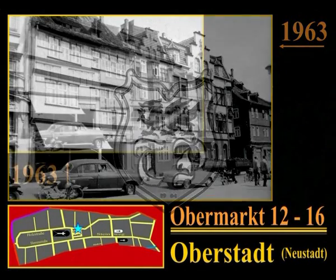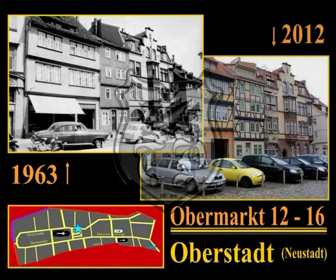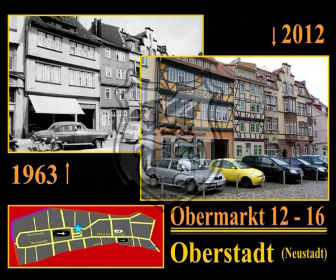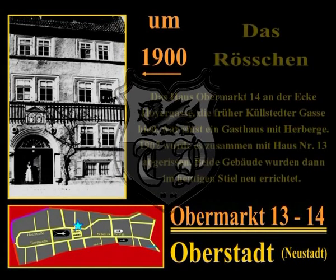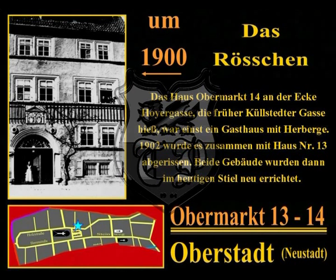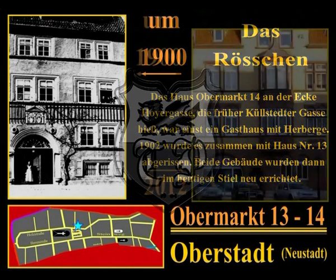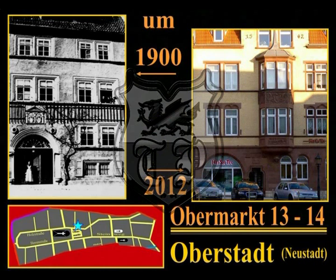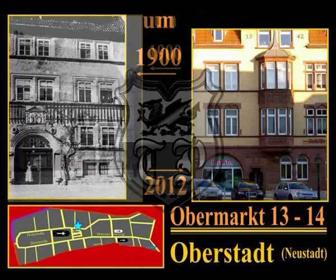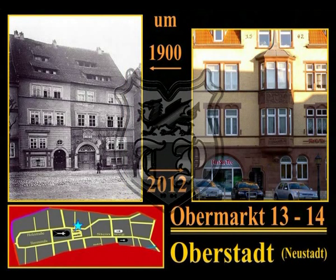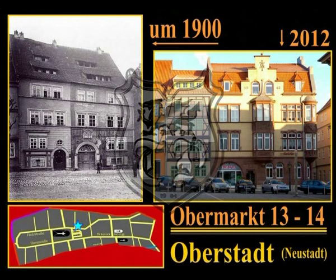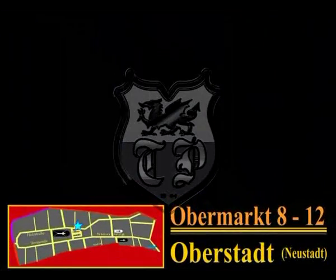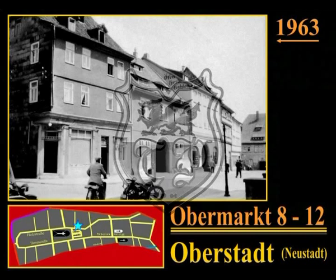Zwischen Bollstädter Gasse und Pfortenstraße führt noch die heutige Heuergasse Richtung Burg. 1570 erstmals erwähnt und nach der Mühlhäuser Familie Heuer benannt, war auch sie einst eine Sackgasse, an deren Ende ein Mauerturm stand. Von 1402 bis zu ihrer Umbenennung 1570 trug sie den Namen Kühlstädter Gasse. Das Haus Obermarkt 14 an der Ecke Heuergasse war einst ein Gasthaus mit Herberge; 1902 wurde es zusammen mit Haus Nummer 13 abgerissen und im heutigen Stil neu errichtet. Dieses Gasthaus, das den Namen Weißes Ross oder Röstchen trug, wurde um 1570 errichtet und war eines der ältesten Gasthäuser der Stadt. Zu den bekanntesten Gästen zählten im Jahre 1620 der Erzbischof von Mainz und im Jahre 1627 Johann Heinrich von Metternich; vom 16. bis 19. Oktober 1632 bezog General Pappenheimer ebenfalls im Röstchen Quartier.